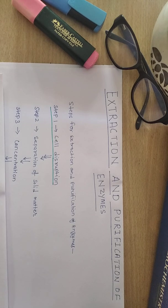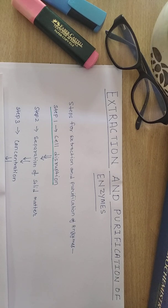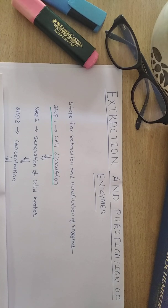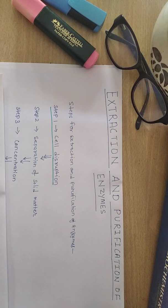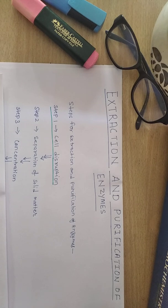The third step is concentration. The concentration of enzymes in the processed media is often very low, so the volume of the starting material must be decreased by concentration without inactivating the enzyme. Only mild concentration procedures which do not inactivate enzymes can be employed. These procedures include thermal methods, precipitation, and to an increasing extent, membrane filtration. Enzymes are thermolabile, so heat treatment should be done for a short time.